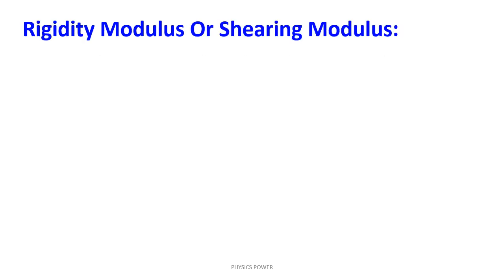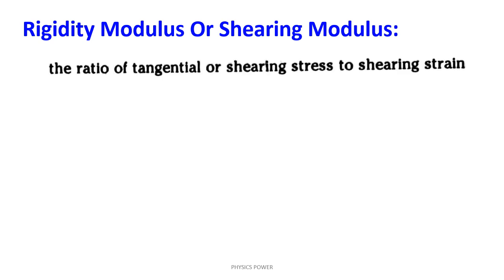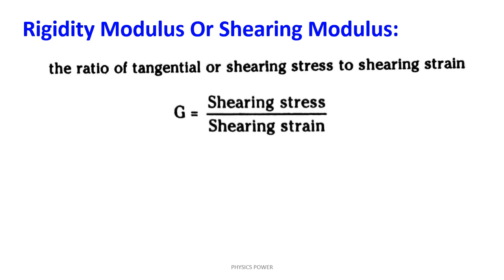Rigidity modulus, or shearing modulus — within the elastic limit, the shearing stress is directly proportional to shearing strain. The ratio of tangential or shearing stress to shearing strain is called rigidity modulus, denoted G or eta. The expression for rigidity modulus is shearing stress divided by shearing strain — simply F divided by A into theta.